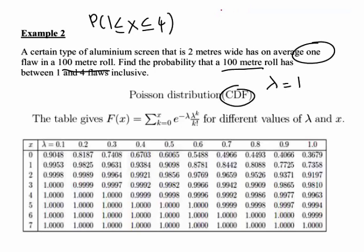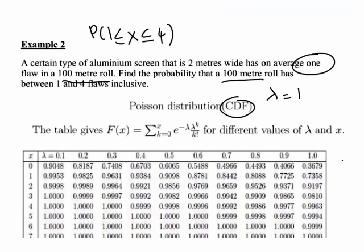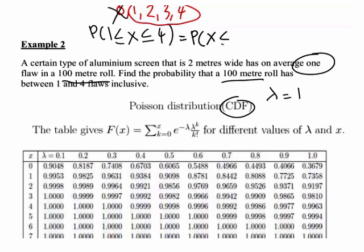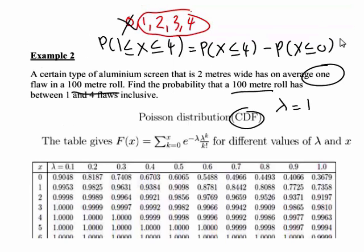But we want between one and four flaws. So let's have a think about what we get when we're looking at less than or equal to four flaws. Less than or equal to four flaws would be any of these possibilities: zero, one, two, three, four. But we're only interested in between one and four. That is, we do not want zero. So we could still stay with our CDF table but subtract off the unwanted probability of X equals zero, which can also be thought of as X less than or equal to zero. So that will then allow us to work out the required probability.